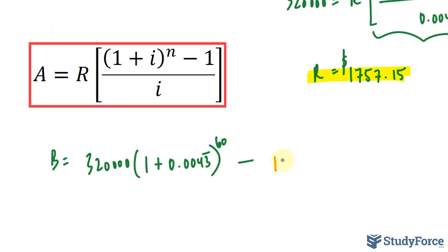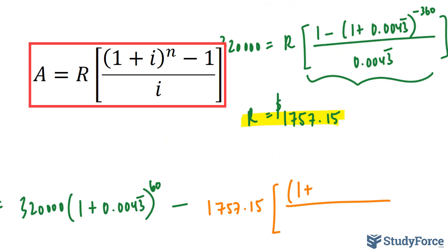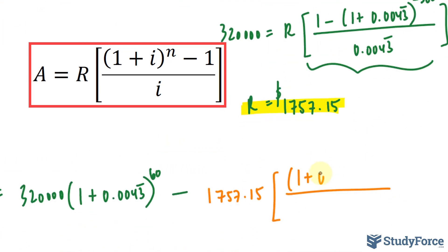So we have 1,757.15. And it was 1, plus our interest, of 0.0043 repeating, raise that to the power of 60, minus 1, over 0.0043 repeating.